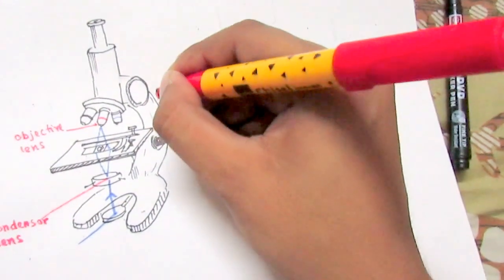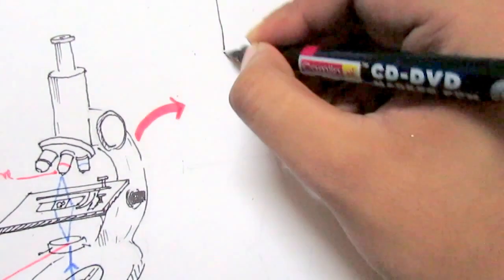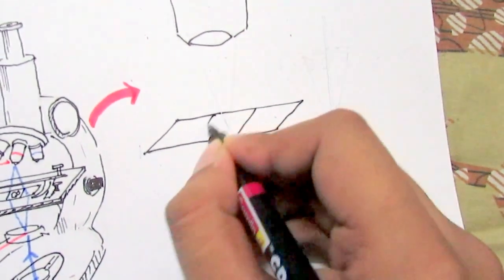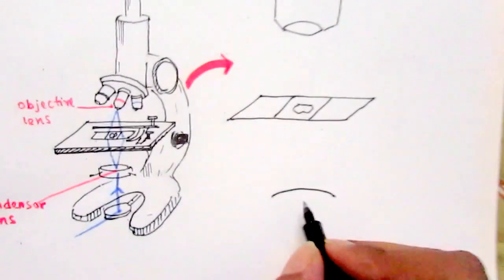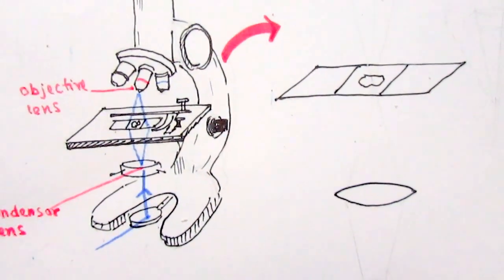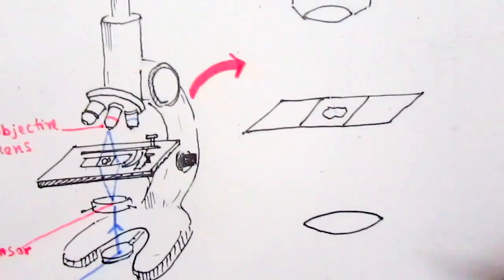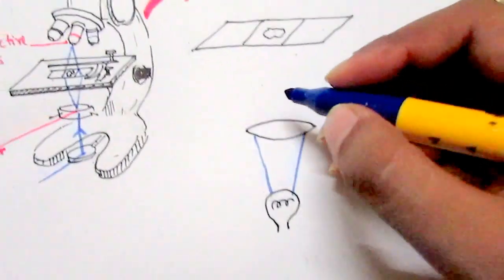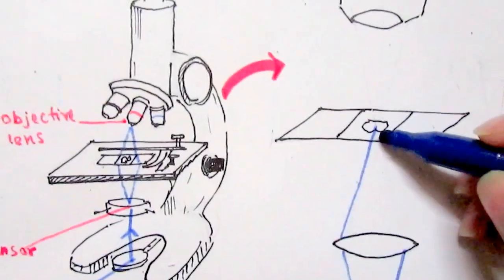If we zoom in on the whole thing, here we have our microscope objective lens, here we have our specimen — suppose we have a cell on a slide. Here is the condenser lens and here is the light source. The light path goes from the light source, first focused onto the condenser lens, and then from the condenser lens light goes to the specimen and falls on it.